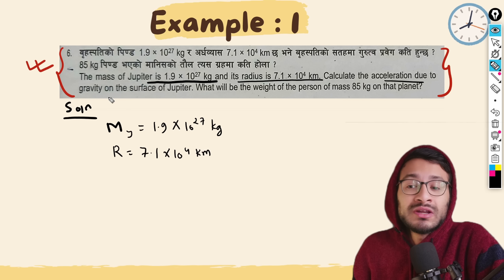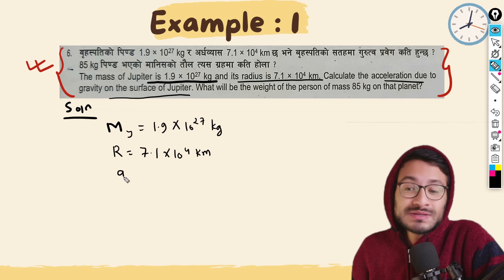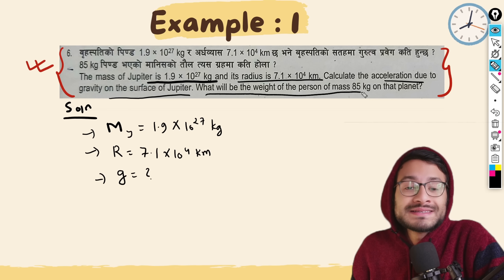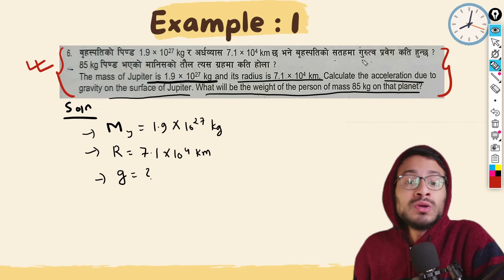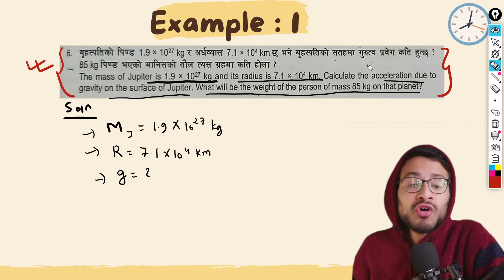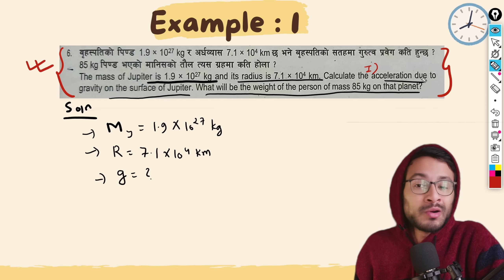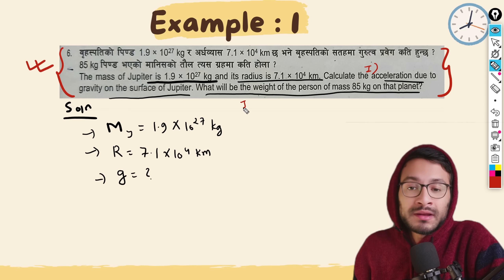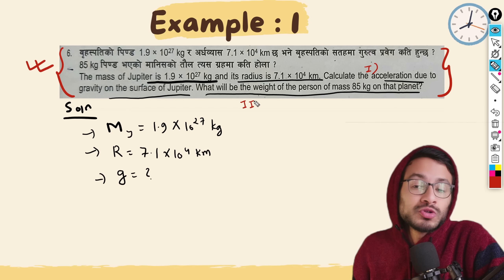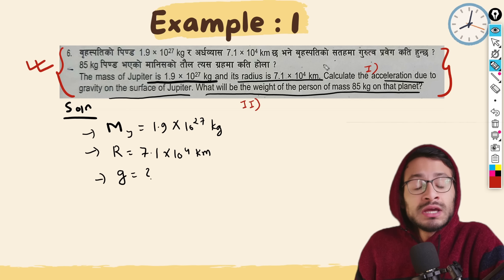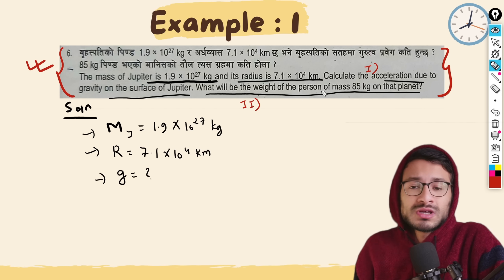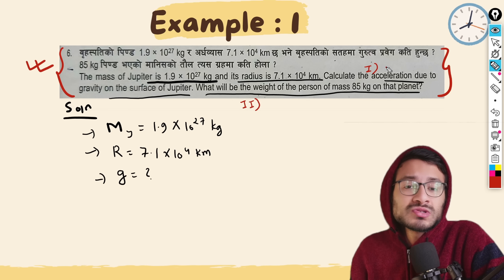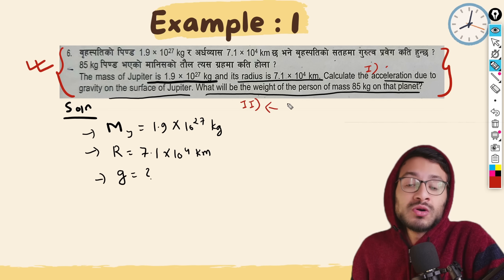Calculate the acceleration due to gravity on the surface of Jupiter. What will be the weight of a mass of 85 kg on that planet? Number 2 is split into two parts: first is acceleration due to gravity, and second is the weight of 85 kg on Jupiter.